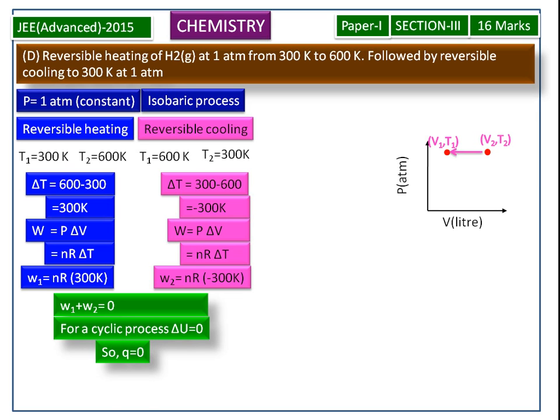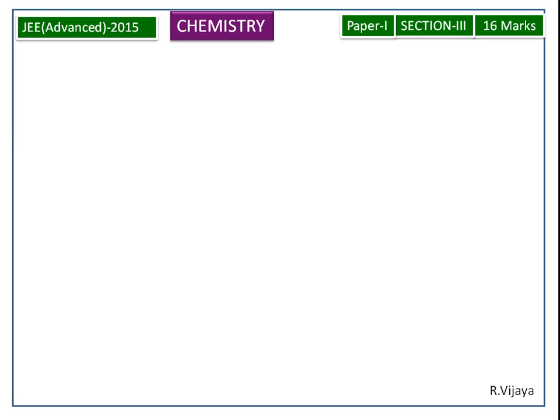In a cyclic process, delta G is equal to 0. For the D process, the answers are W is equal to 0, delta U is equal to 0, Q is equal to 0, and delta G is equal to 0.